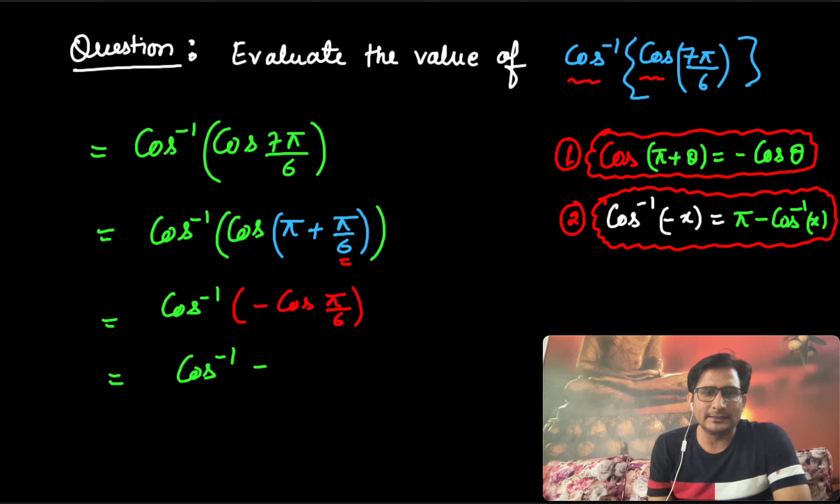What is x in this case? x is cos(π/6). Let me apply formula number 2. If you apply formula number 2, it can be written as π minus cos inverse x, where x is cos(π/6).